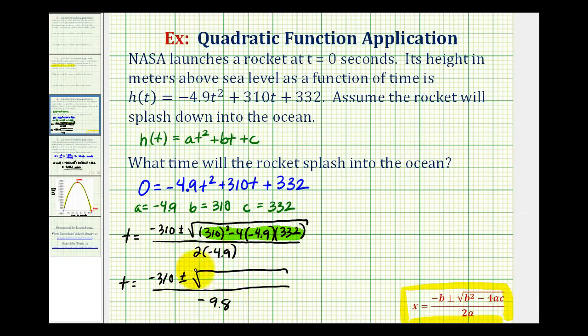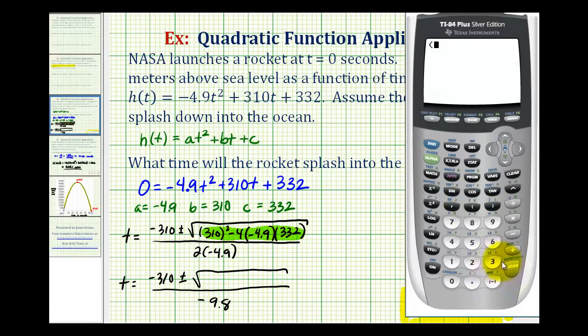So now we'll go to the calculator and determine the value of the discriminant, or this expression here. So we have 310 squared, minus 4 times -4.9, times 332. So the discriminant, or the number underneath the square root, is 102,607.2.